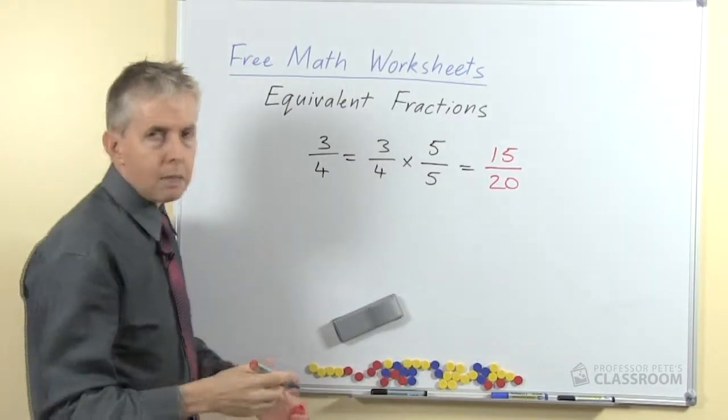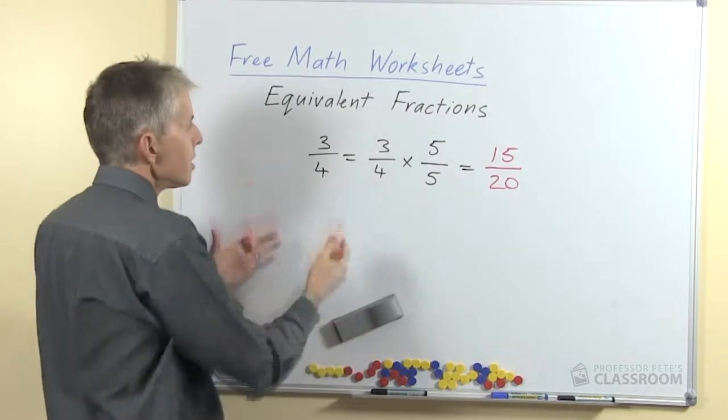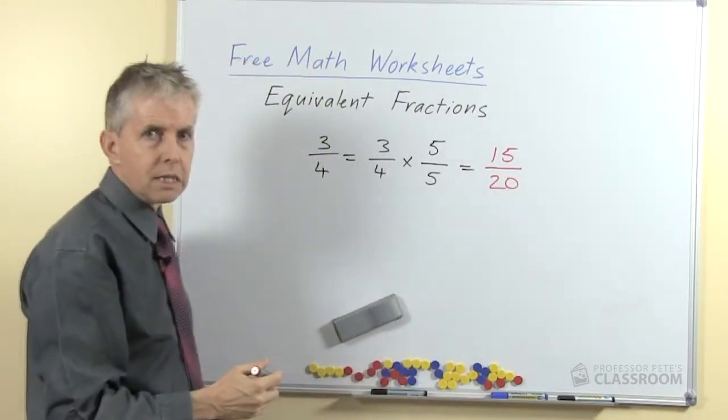So we can see symbolically, mathematically if you like, that three-quarters is equal to fifteen-twentieths using that method.